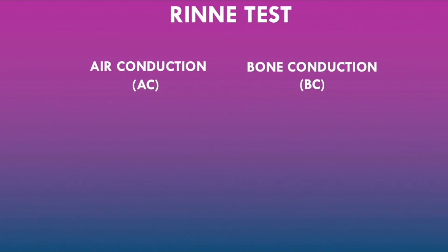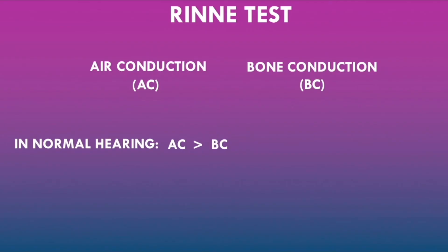To understand the Rinne test findings, it's important to understand air conduction (AC) and bone conduction (BC). Air conduction refers to sound transmitted through air — when the vibrating fork is placed over the ear. Bone conduction refers to sound traveling through bone — when the fork is placed on the mastoid bone. In normal hearing, air conduction is greater than bone conduction, which is referred to as Rinne positive.